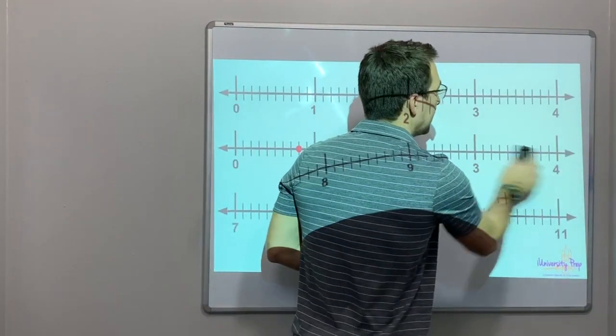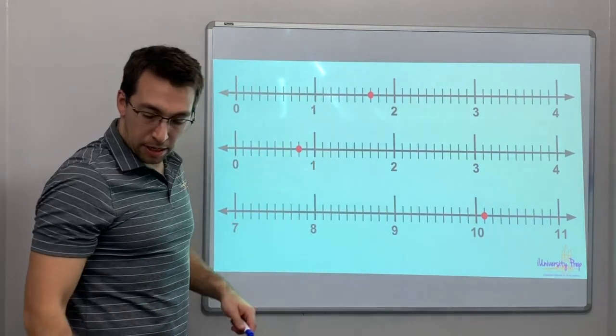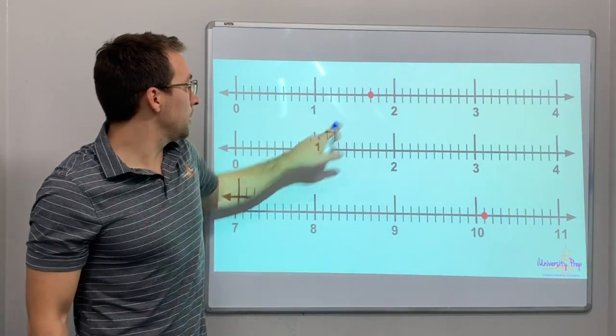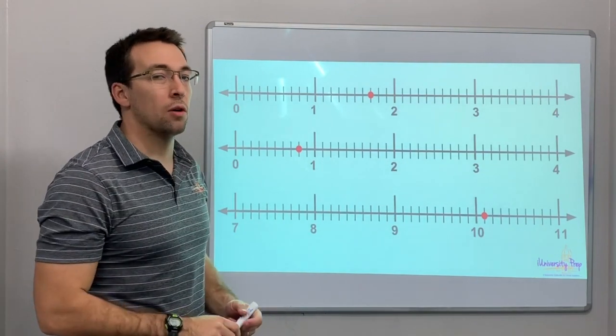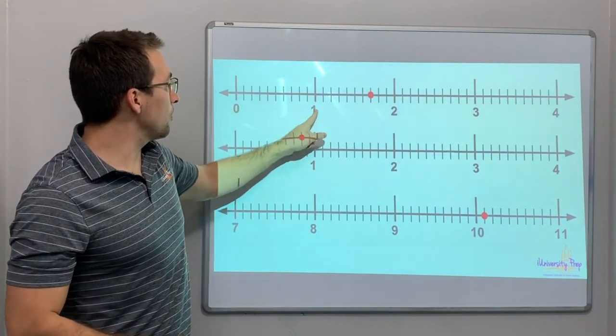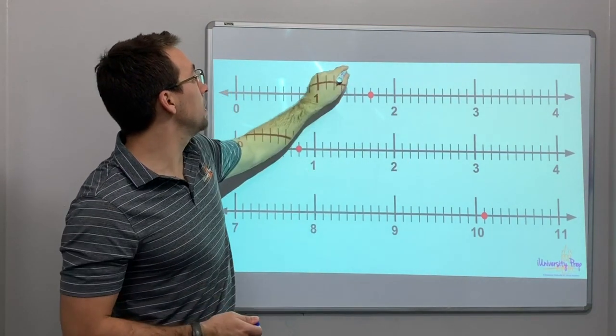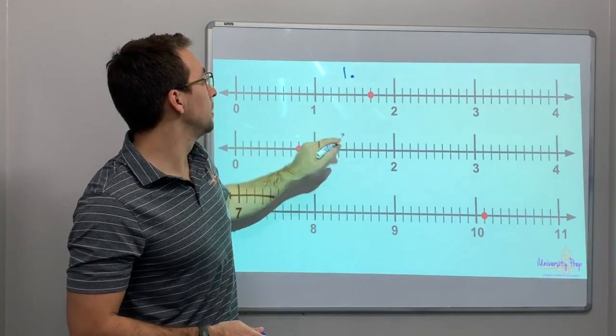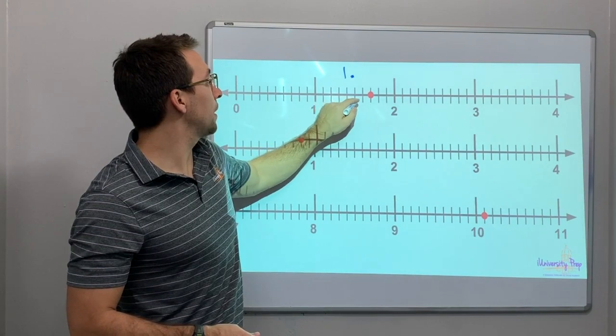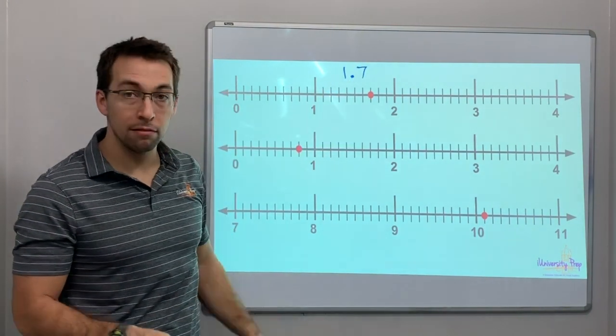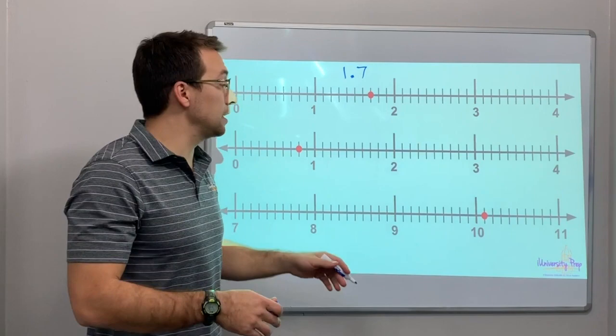So let's look at this. There's three number lines. 1, 2, 3 points. We've got to label these points. So we're greater than 1. So 0, 1, 2. We're less than 2. So it's going to be 1.1, 2, 3, 4, 5, 6, 7. 1.7. Makes sense.